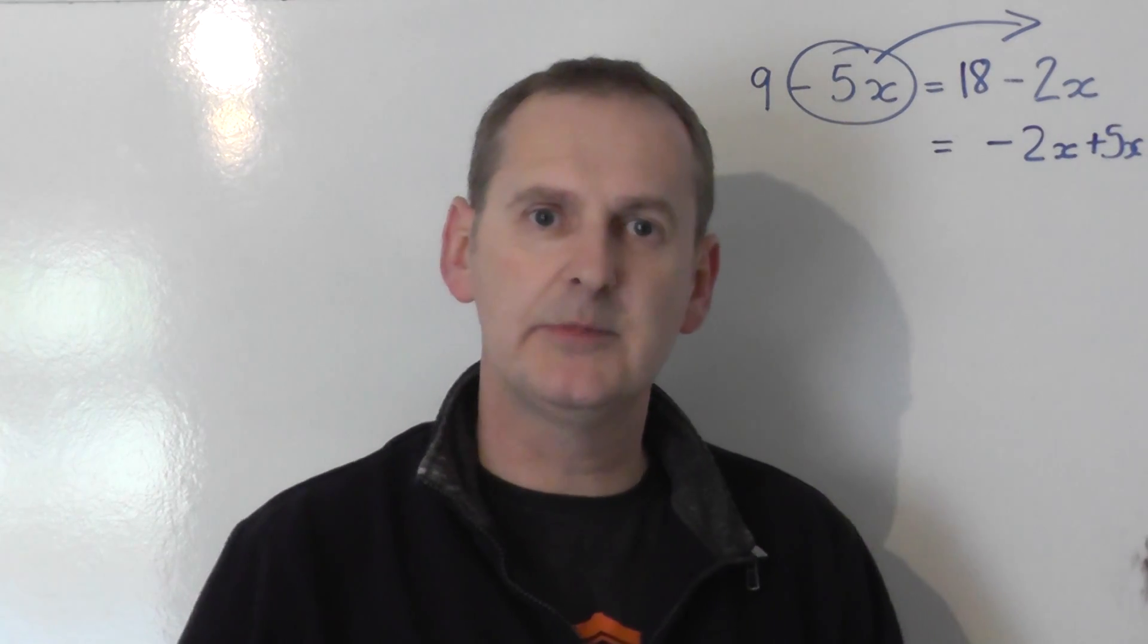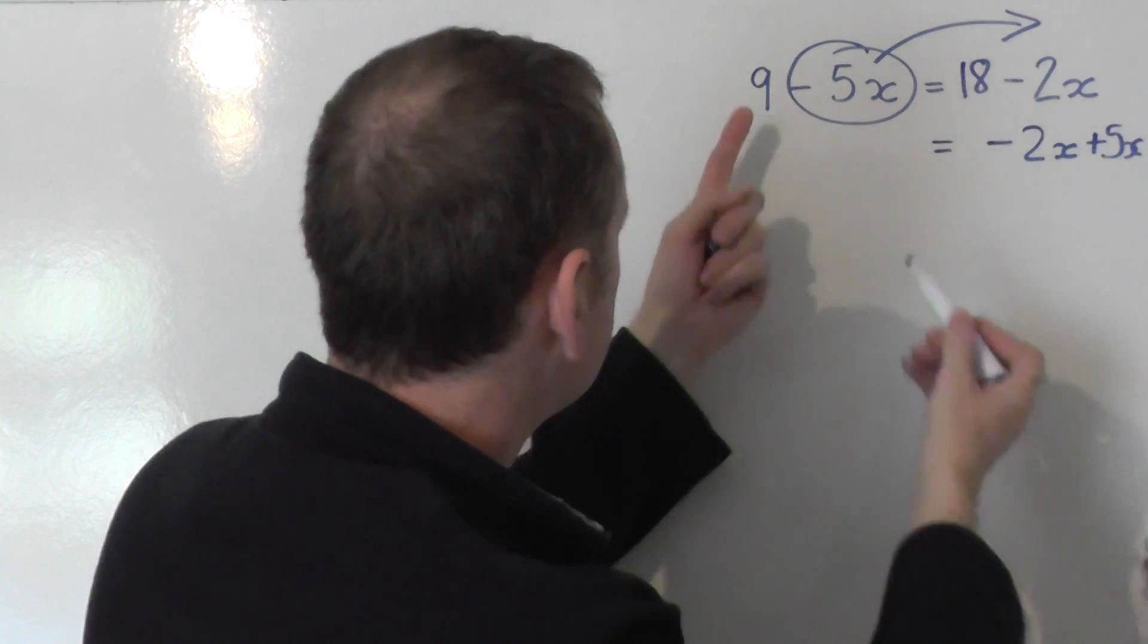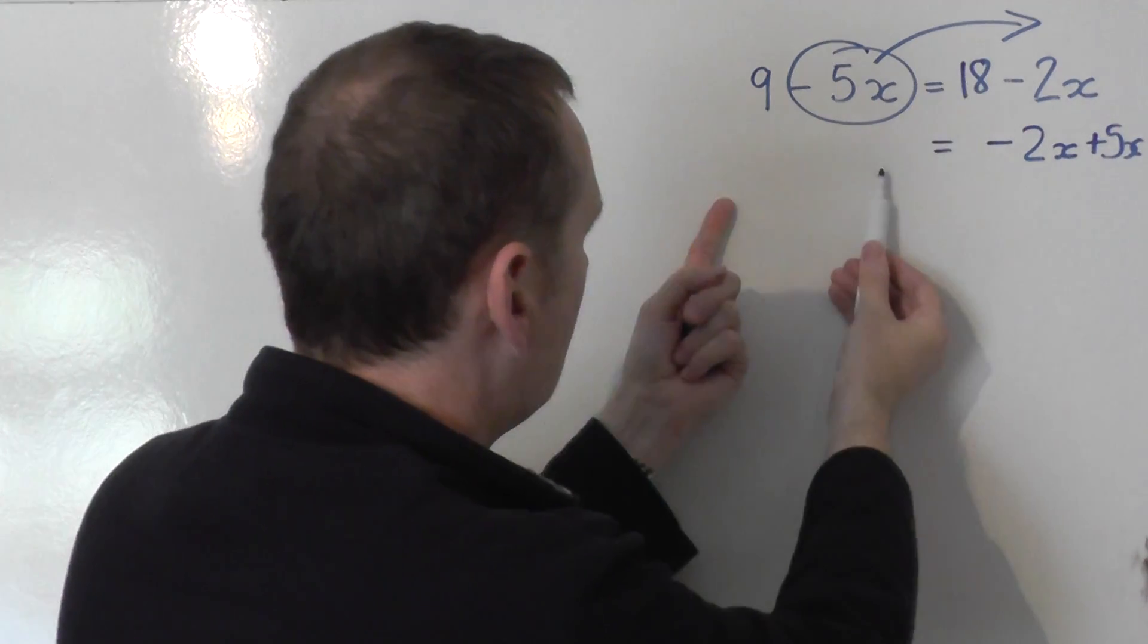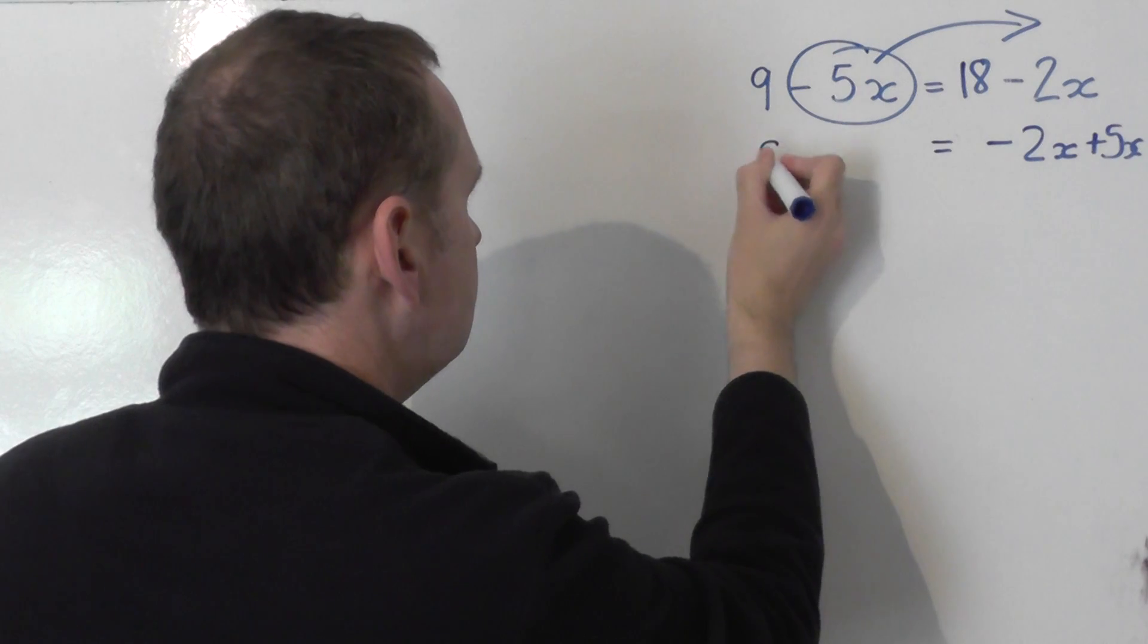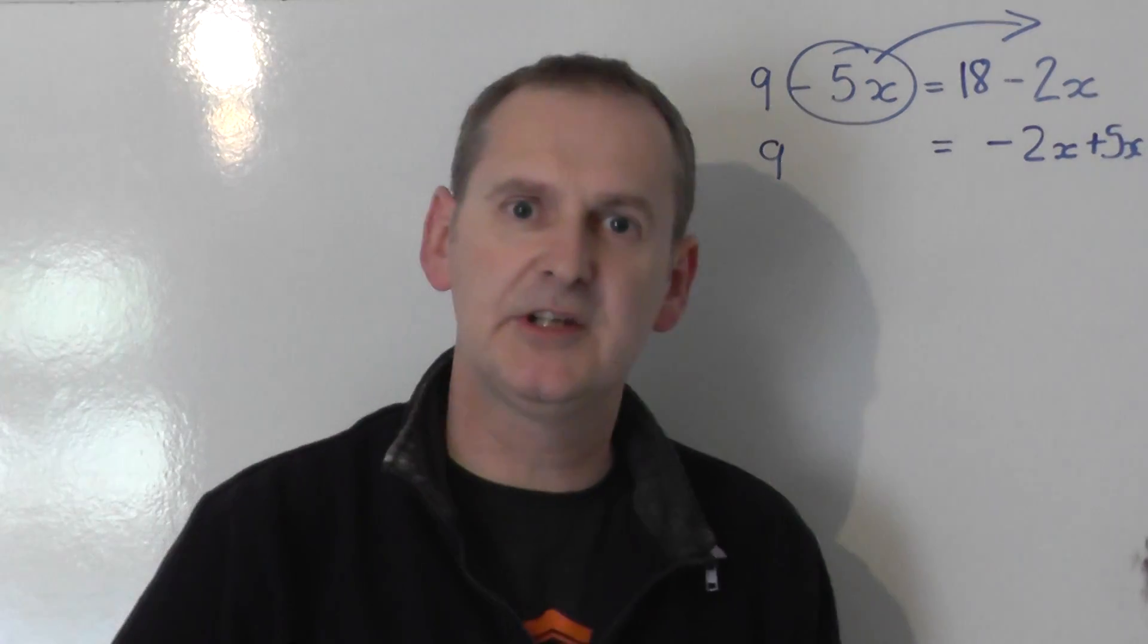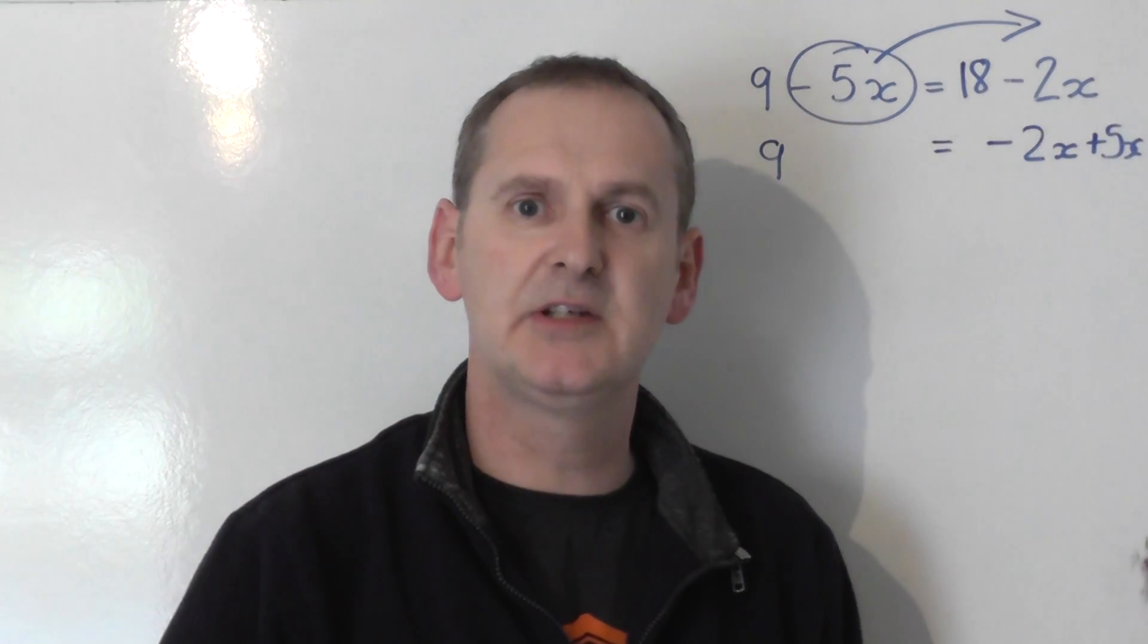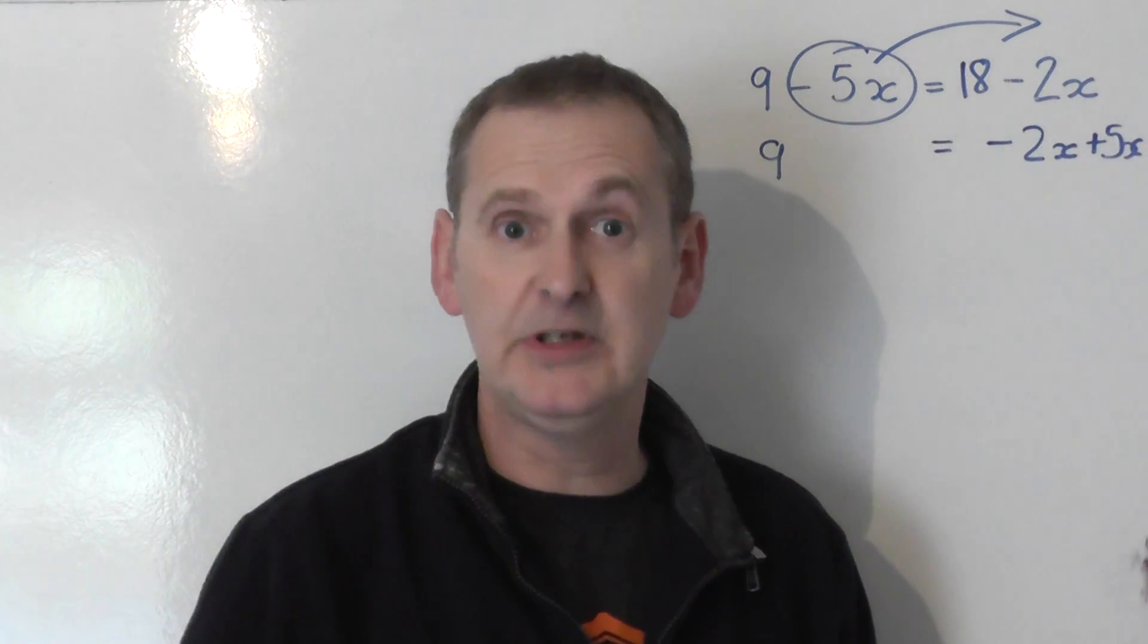That means I now collect the number terms on the left-hand side. I've got two number terms, the 9 and the 18, to go on the left-hand side. So I've got 9. That doesn't move anywhere. It doesn't swap sides, doesn't swap signs. So it remains as 9, which means plus 9.